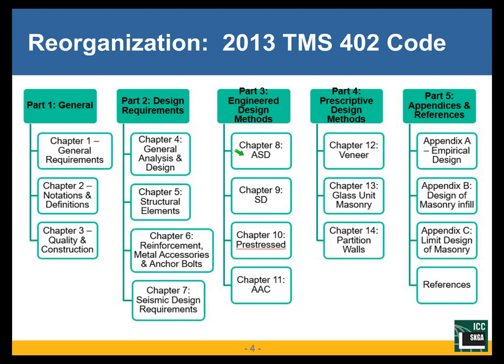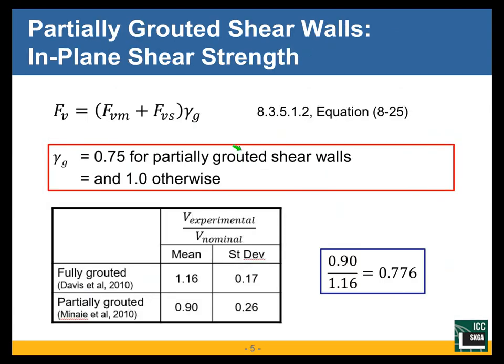We did introduce a partially grouted shear wall factor, gamma sub G, which has a pretty big impact on partially grouted shear walls. This came about because members of the code committee and others were concerned that some of our design provisions were unconservative for shear in partially grouted shear walls.